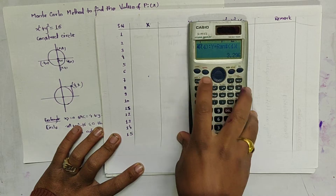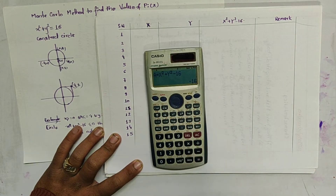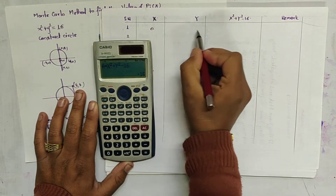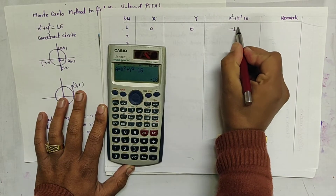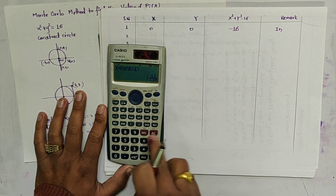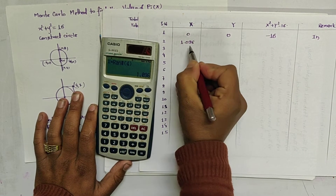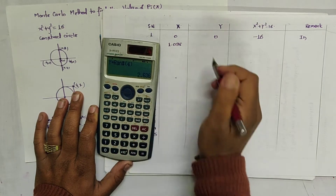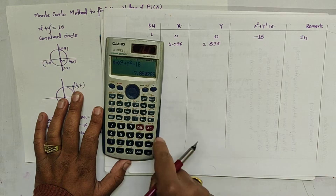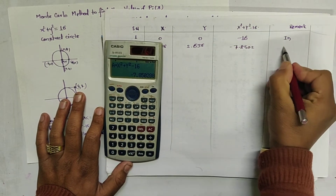Let us start calculating. Suppose x = 0 and y = 0: A = 0 + 0 − 16 = −16, which is less than 0, so it lies inside the boundary. For the second point, x = 1.096 and y = 2.636, giving A = −7.8502, which is also inside the boundary.